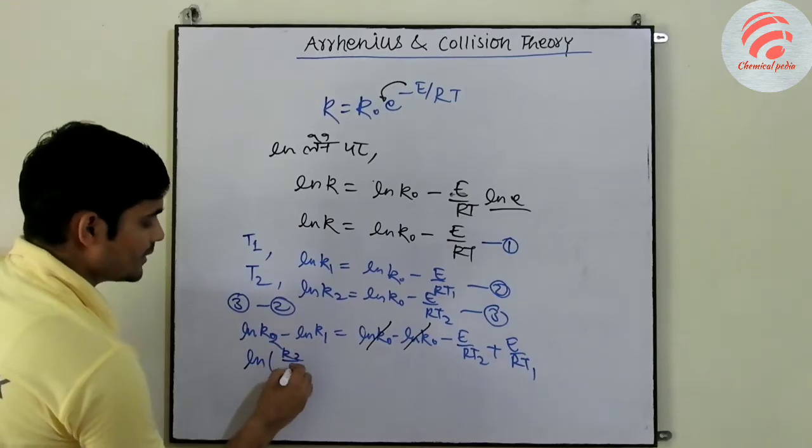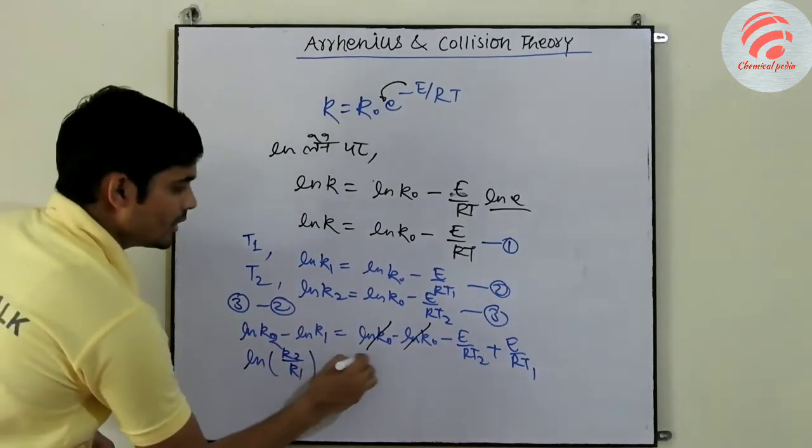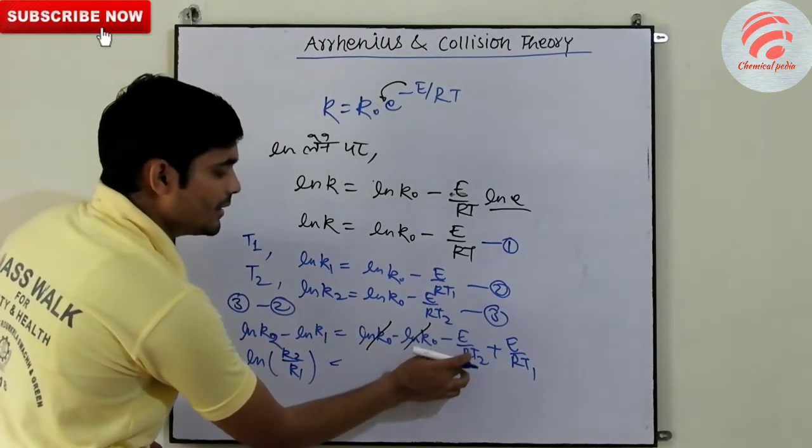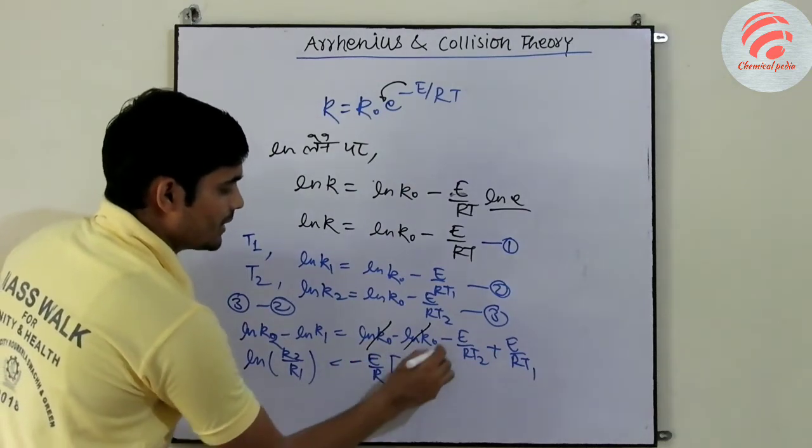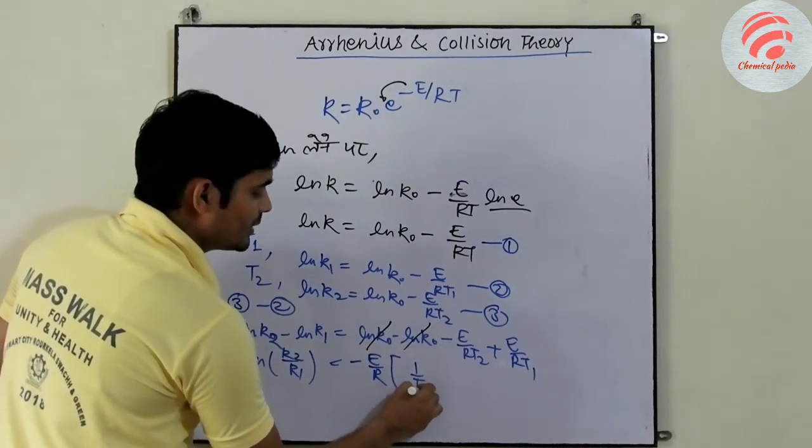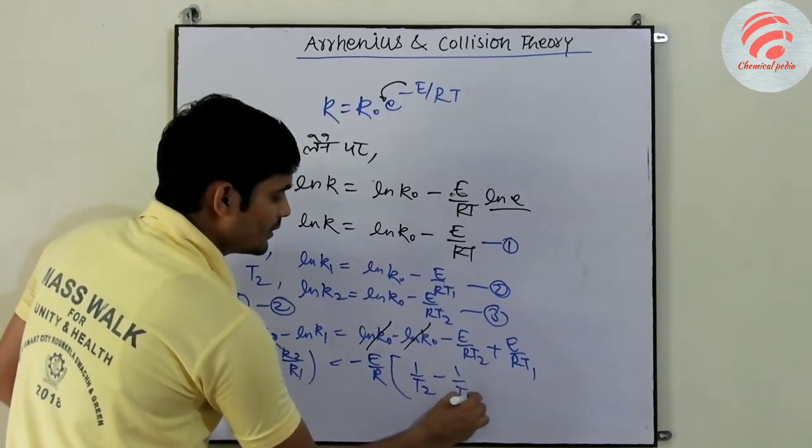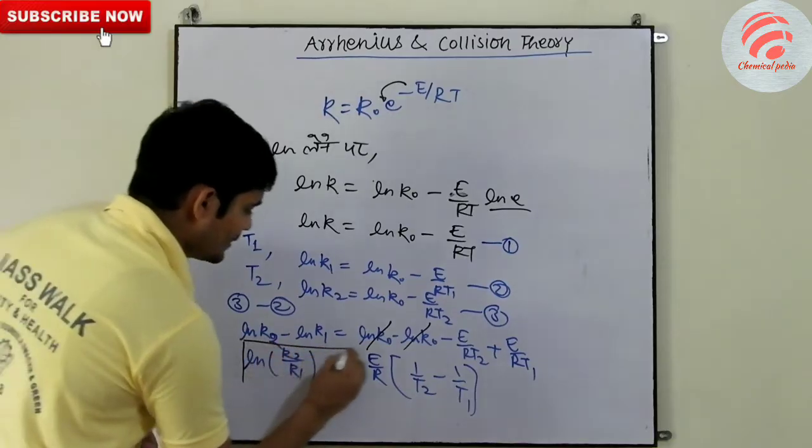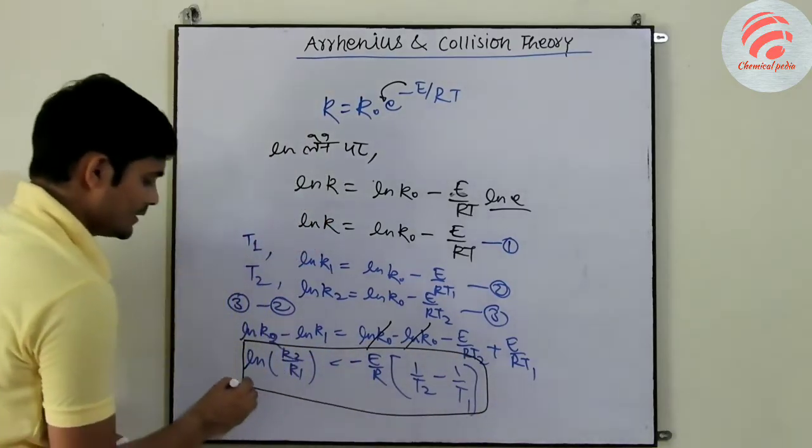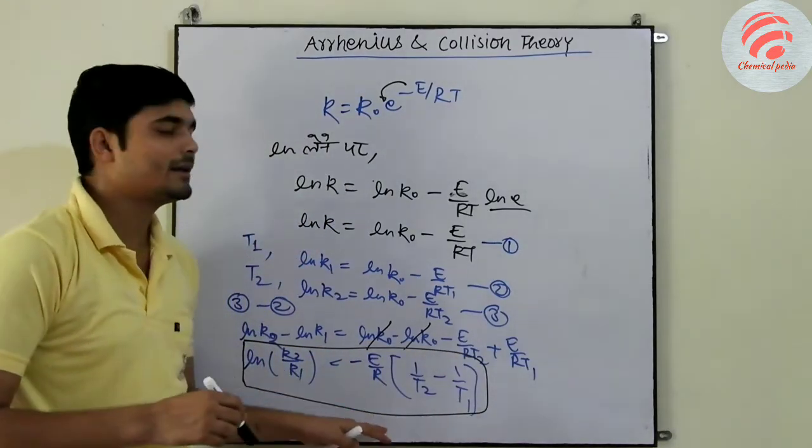ln k2 upon k1 we can write. Here we have common E upon R minus E upon R. If we have common, we have 1 upon T2 minus 1 upon T1. This is our derivation, Arrhenius law. This is our Arrhenius law.